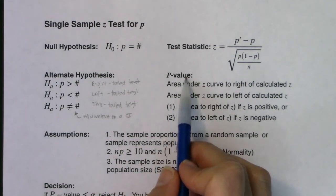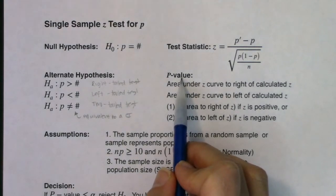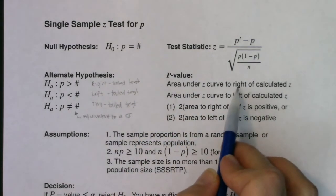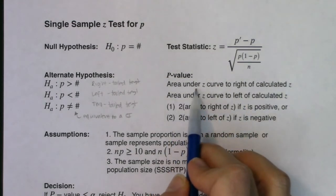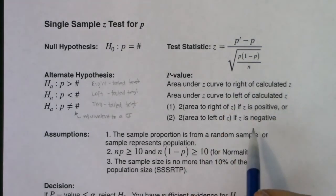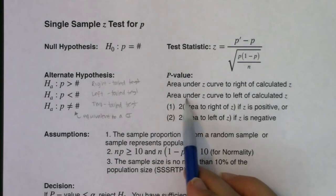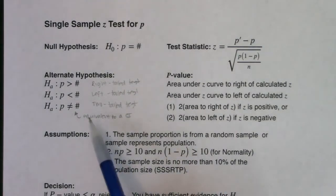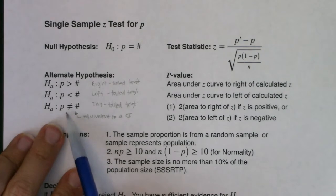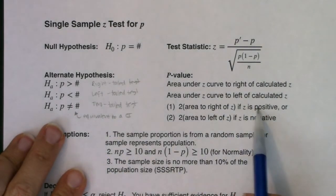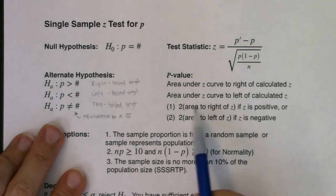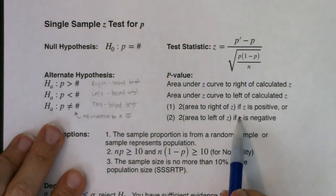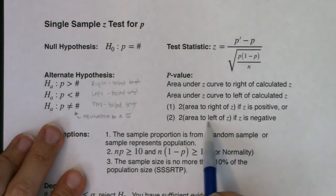We've talked about probabilities on continuous numerical variables that go with area under a curve — area under that standard normal curve. If you've got a greater-than alternate, you look at the right tail and find the area to the right of your test statistic. If you have a left-tailed test, find the area to the left of your calculated z-score. For a two-tailed test with a positive z-score, calculate the area to the right and double it for symmetry. If the z-score is negative, find the area to the left and double it for symmetry.